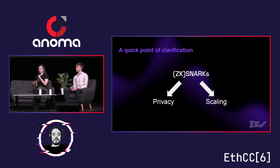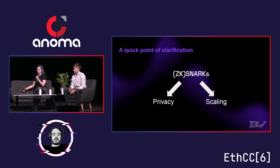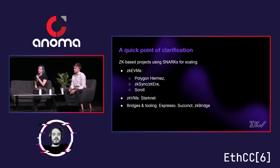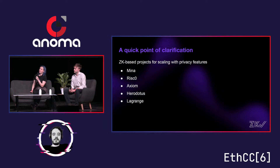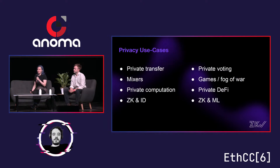A quick point of clarification: everything I'm talking about there is ZK. There are ZK Snarks, but the zero-knowledge part of ZK Snarks is really only used for the privacy-type tech. There are other properties of Snarks used for scaling, and this is sometimes confusing. ZK EVMs, ZK VMs, and a lot of bridging — these are not really privacy; they're using the ZK Snark for scaling. You also have ZK-based projects focused on scaling that do have some privacy features, but privacy isn't necessarily their primary focus.